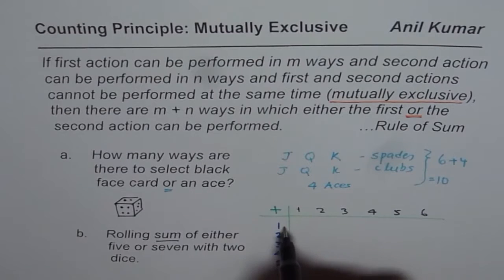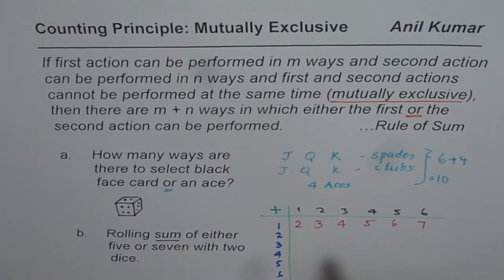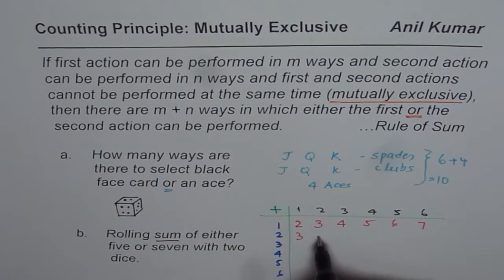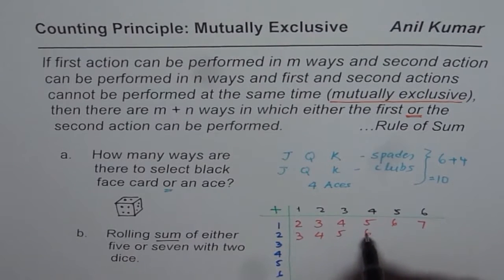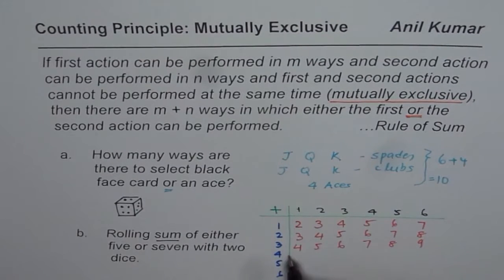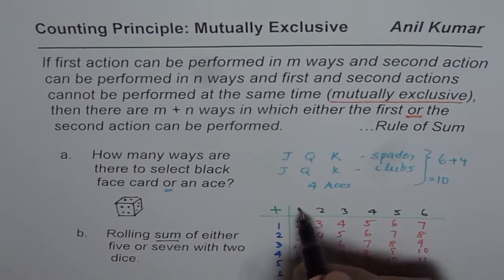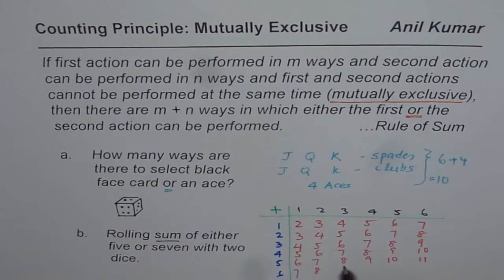Filling out the complete table: starting from die one showing one, the sums go two, three, four, five, six, seven. For die one showing two: three, four, five, six, seven, eight. For three: four, five, six, seven, eight, nine. For four: five, six, seven, eight, nine, ten. For five: six, seven, eight, nine, ten, eleven. For six: seven, eight, nine, ten, eleven, twelve. So the maximum possible sum is twelve.